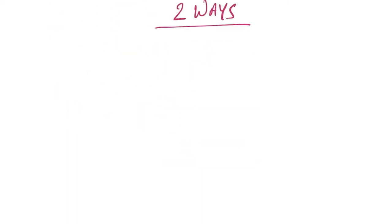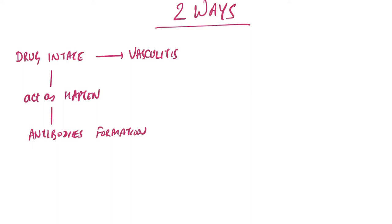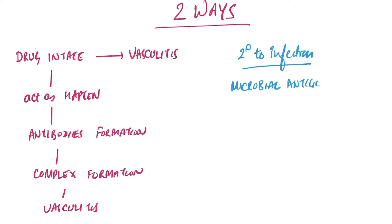There are two ways this can happen. You take a drug that acts as a hapten; antibodies form against it and combine to form a complex causing vasculitis. Or it can be secondary to microbial infection, which leads to formation of antibodies. This antigen-antibody complex deposits in the vessel wall causing vasculitis.